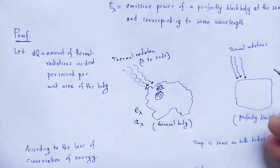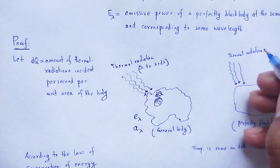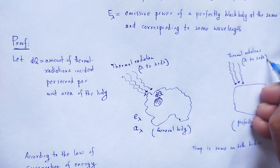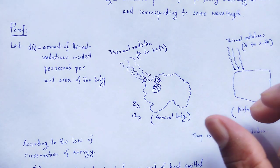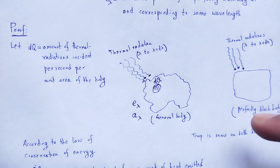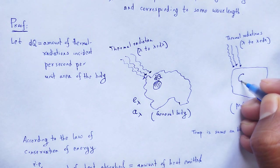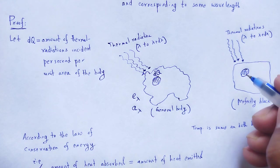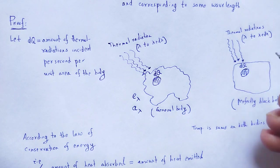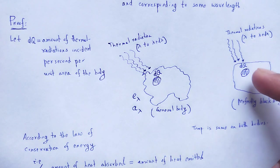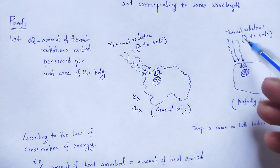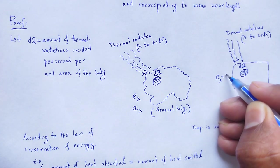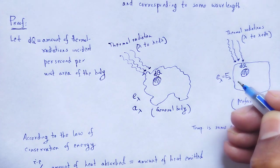Similarly, for the black body, we consider thermal radiations within wavelength lambda to lambda plus d_lambda, with temperature on both bodies being the same. We consider a unit area of the perfectly black body, and dQ amount of heat is also incident within that unit area. For the perfectly black body, the emissive power is capital E_lambda.